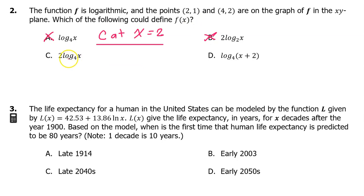Let's evaluate C at x equals 2. This would be 2 times the log base 4 of 2. The log base 4 of 2 is 1 half, as we mentioned, so this would become 2 times 1 half, which equals 1. That is correct, so C might be the answer. Let's see if it works for the input value of 4. Option C at x equals 4 would be 2 times the log base 4 of 4. Log base 4 of 4 is 1, so we would be left with an output value of 2, which is correct. So the answer is C.